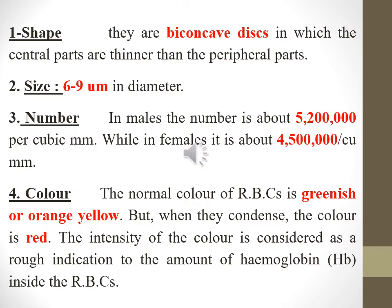The number in males is about 5,200,000 per cubic millimeter, while in females it is about 4,500,000 per cubic millimeter. The normal color of RBCs is greenish or orange-yellow, but when they are condensed, the color is red.